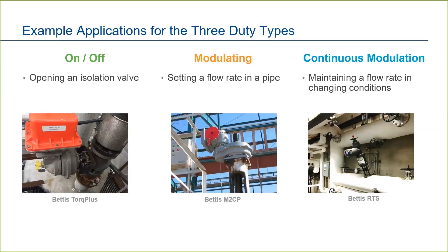Lastly, we have continuous modulation service. Here, we have an example where the Bettis RTS is controlling steam flow in a large building in New York City. Precise control was required, and with steam there may be changing process conditions upstream — fluctuating pressure or temperature — that require an actuator with continuous modulation capabilities. So there you have it: three basic types of service for electric actuators — basic on-off, simple modulation, and continuous control modulation.